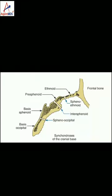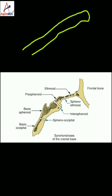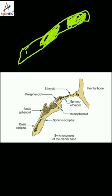Hi, this is Dr. Bahamik Joshi from Aspire MDS. Let's see what a synchondrosis is. As you all know, the bones of the base of skull are initially made up of cartilage, and from this cartilage they get ossified to become bone. When ossification centers appear within this cartilage, bone starts growing from these centers. As separate bones form, the areas where cartilage still persists between them are known as synchondrosis.